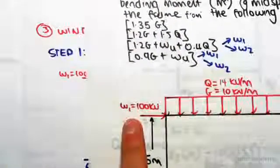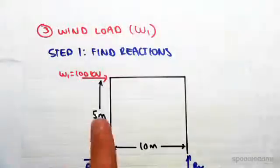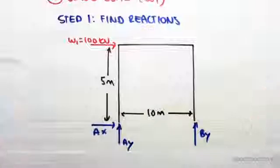So looking at wind load case one, we have 100 kilonewtons at the left here. Just isolating that, 100 kilonewtons there, we now need to find the reactions.